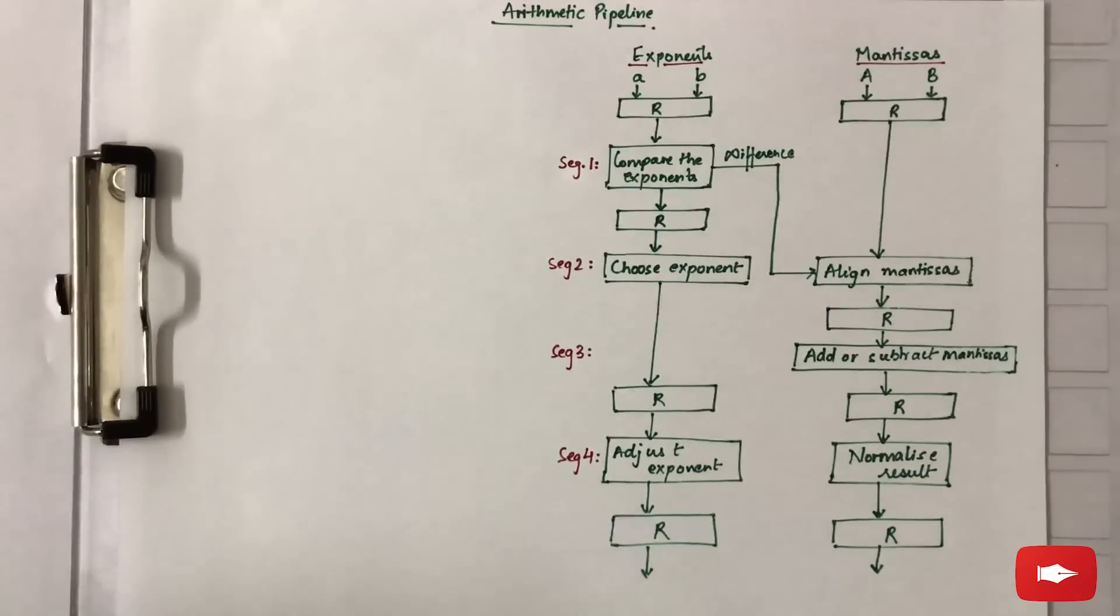The topic for this video is arithmetic pipeline. There are certain applications which require repeated arithmetic operations like addition, subtraction, multiplication, and many more. We use arithmetic pipeline for such purposes, basically to speed up processing because pipelining has the advantage of speed-up performance. Let's illustrate this with an example.